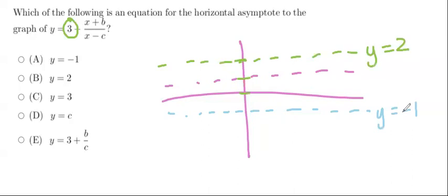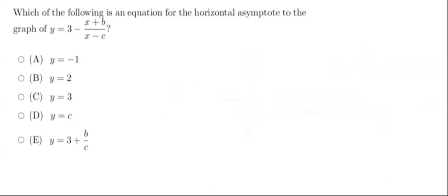So hopefully that was helpful. The key concepts to review, if you still need help with that, are definitely the horizontal asymptote rules. I only went over one of the rules. Just so you know, there are three different cases. And if you just type that into Google, like horizontal asymptote rules, you'll see the additional ones there.